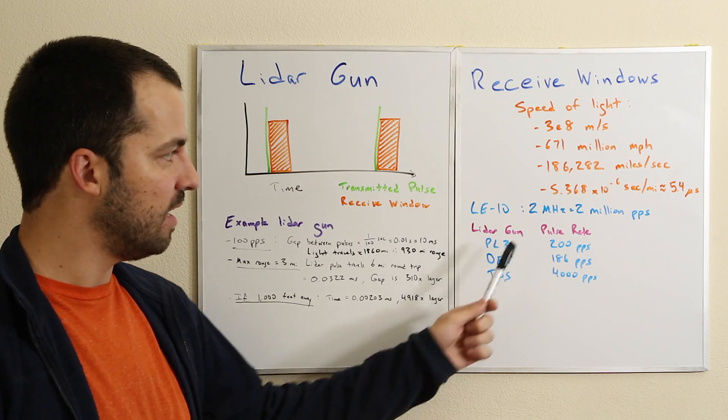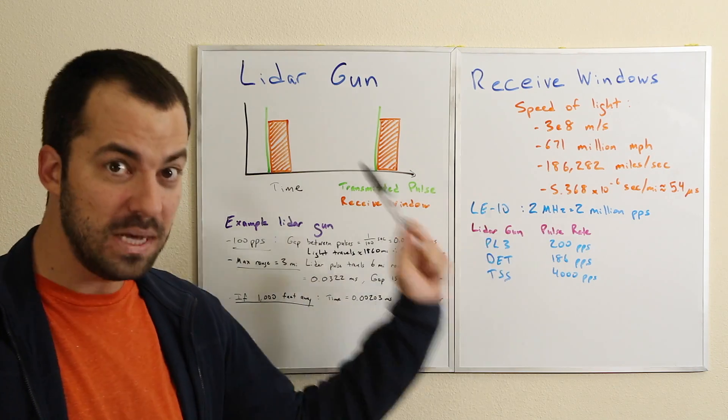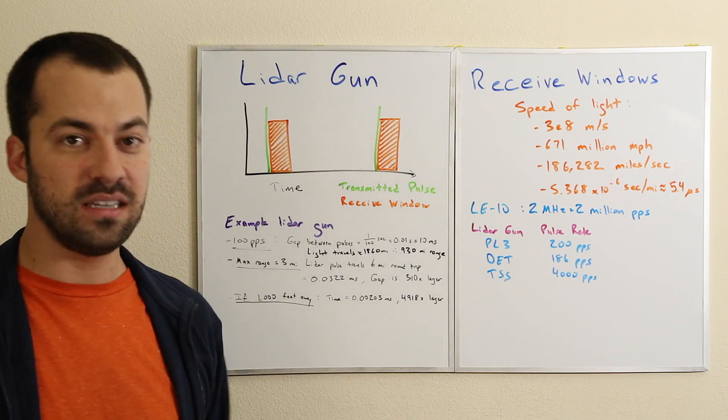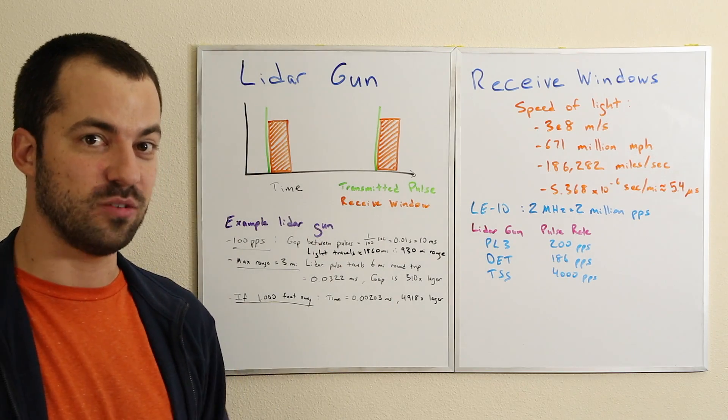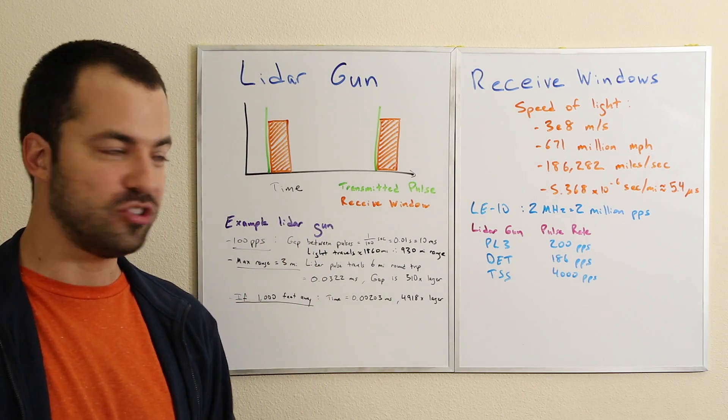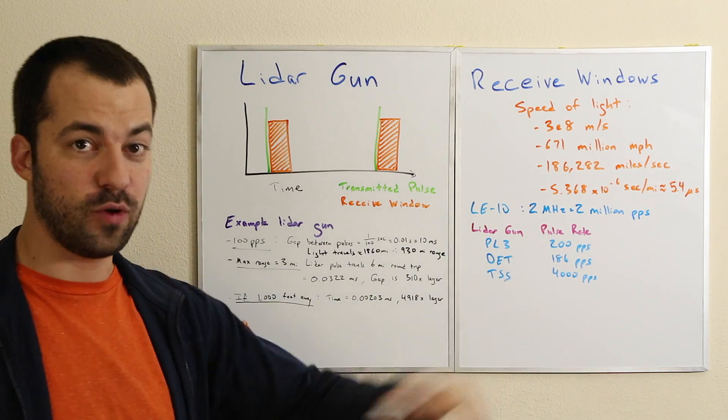That's why if you look at a jammer like the LE-10, it's transmitting a ton of pulses. It's transmitting at 2 megahertz - 2 million pulses per second. When they talk about a high power brute force jammer, it's because it's transmitting so many pulses.